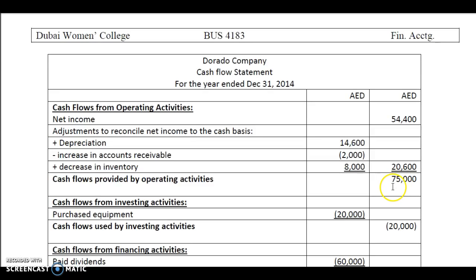Your cash flow provided by the operating activities is 75,000. It's a positive figure, therefore it is cash flows provided by operating activities.